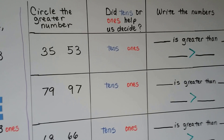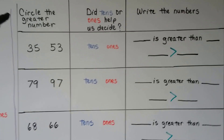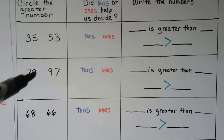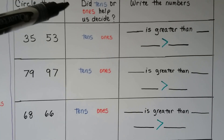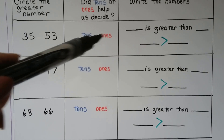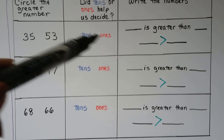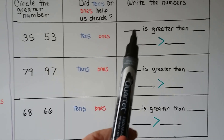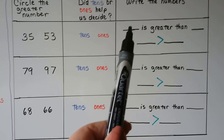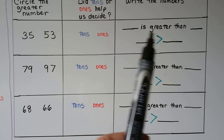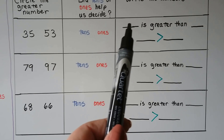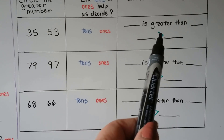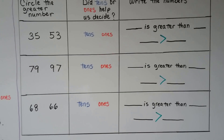Now here we have a chart that says: circle the greater number. We have two numbers to choose from in each problem. Then it wants to know, did tens or ones help us to decide? We have to circle either tens or ones. Then it wants us to write the numbers — the greater number goes first, followed by the greater than sign.